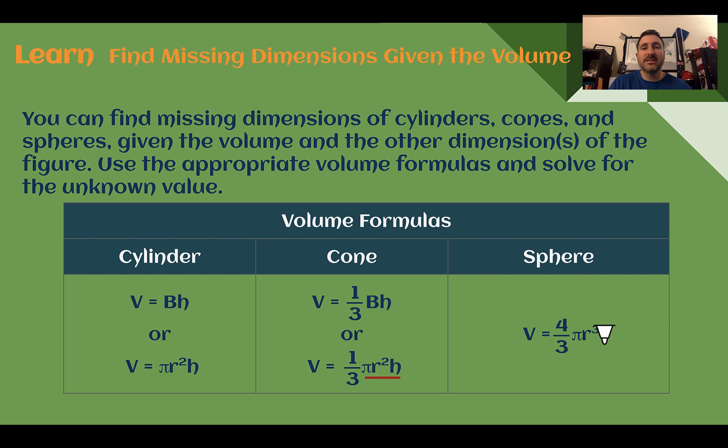And then volume of a sphere, we have four-thirds pi times the radius to the third power. So using those, if we're given the volume, and in the case of a cylinder or cone, one of the missing either radius or height, we'll be able to solve for what's left. For a sphere, you won't be given the missing radius, since that's the only thing left to find.